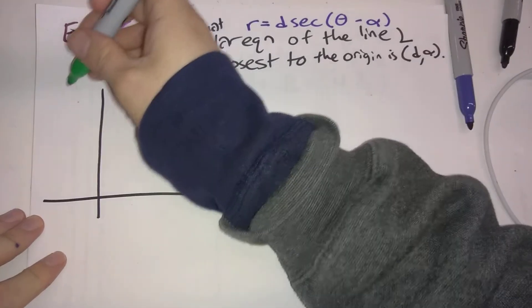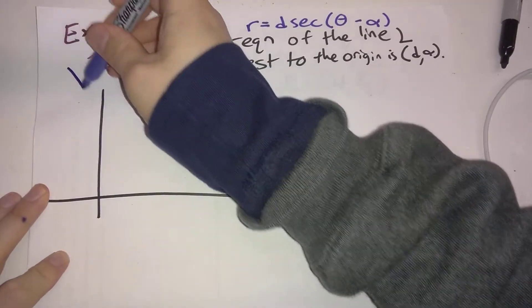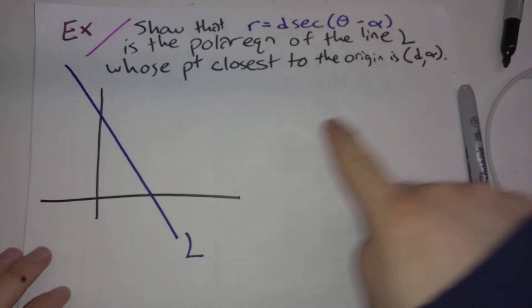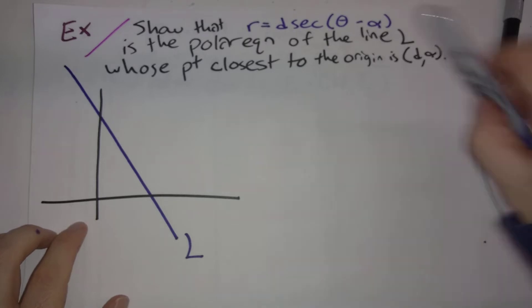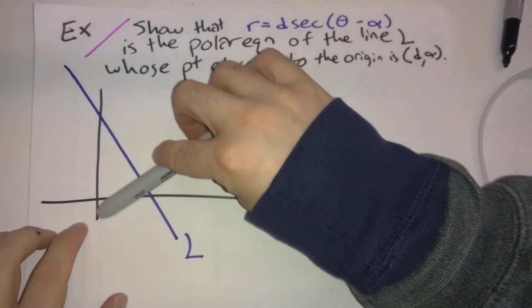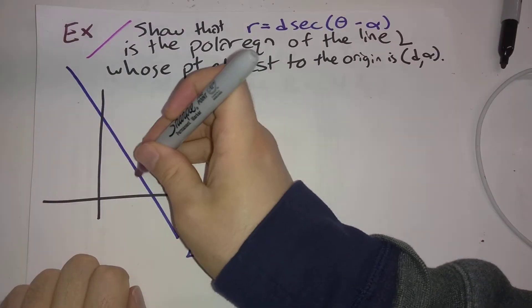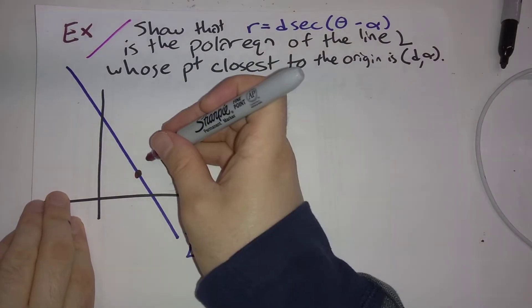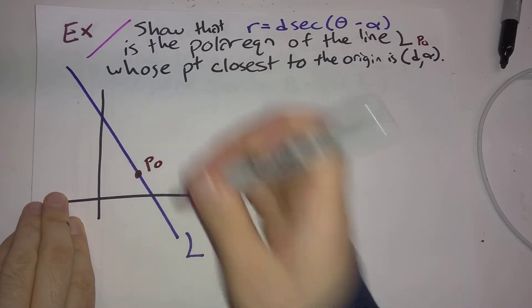So let me draw a line here. So here is our line L, and there is a particular point here that is the closest one to the origin. I think it's going to be right around here. Of all the points on this line, this is going to be the closest one to the origin. So I'll call this P-naught. Here is P-naught.